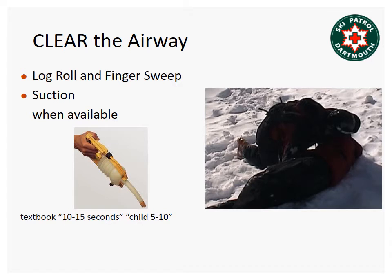Clear the airway if it is obstructed with fluids or foreign bodies. Immediately and aggressively log roll the patient up onto his or her side and drain the fluids out until suction is available. When a suction unit is available, insert the device and suction while withdrawing it slowly. For the written test, the textbook states that you should suction for no more than 10 to 15 seconds in an adult, or 5 to 10 seconds in a child. In reality, you should suction until the airway is clear of blood or vomitus.